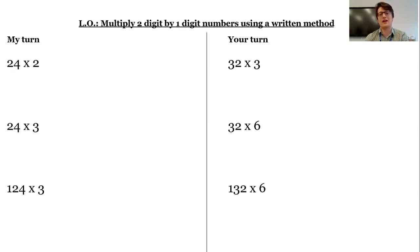Now there are lots of ways of doing that and actually we could do that mentally, but I just want to make sure that we're really clear what's going on here. So I'm going to set it out in a column, 24 times 2, I've got my tens, I've got my ones.